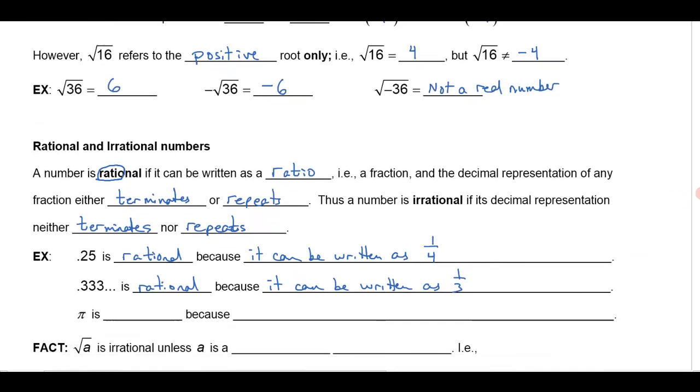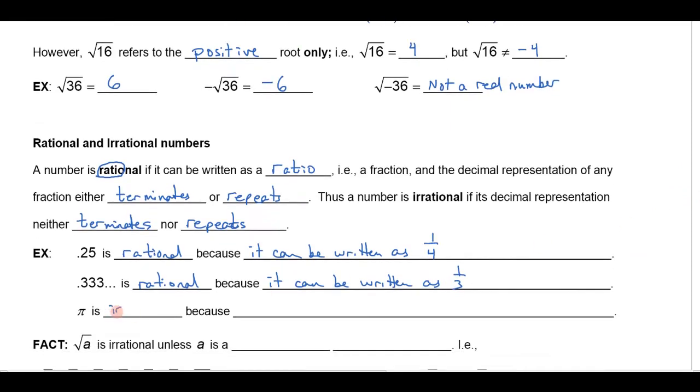On the other hand pi is irrational. It cannot be written as a fraction. And you remember that pi is 3.14159 and it never stops. It never terminates and it never repeats. So pi is irrational because its decimal representation never terminates nor repeats. And that's what we mean by an irrational number.